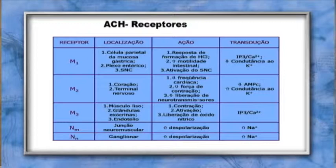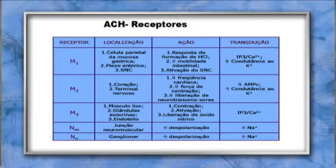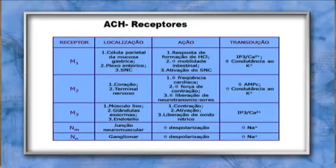Os receptores muscarínicos podem induzir diminuição ou aumento da condutância ao potássio. O segundo mensageiro difere entre M1, M2 e M3. O M1 na célula parietal da mucosa gástrica gera formação de ácido clorídrico; no plexo entérico, aumenta a motilidade; no sistema nervoso central, ativa-o. O M2 no coração causa bradicardia e diminuição da força de contração; no terminal nervoso, altera a liberação de neurotransmissores. O M3 no músculo liso gera contração, ativação das glândulas exócrinas e liberação de óxido nítrico no endotélio.